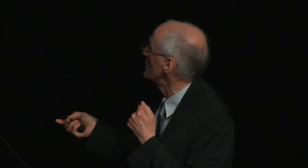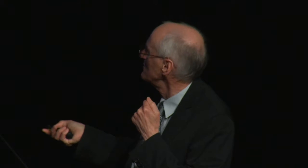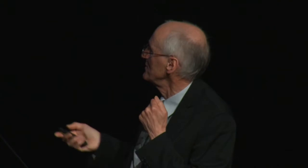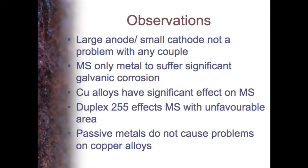Similar work by Tony Truman and colleagues at DSTO looked at marine-type alloys and found again very little galvanic effect between the various copper alloys and stainless steels. Mild steel corrodes by itself, but the additional corrosion from galvanic action occurs only with copper alloys and, to a certain extent, with Ferralium 255 stainless steel. Large anodes with small cathodes are again not a problem. Mild steel is the only one to suffer significant corrosion. Copper alloys are a major problem with mild steel, and duplex 255 affects mild steel with an unfavourable area. Generally, we don't have problems with passive metals — you need to have a large cathode area.